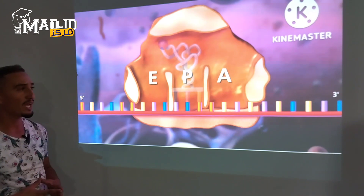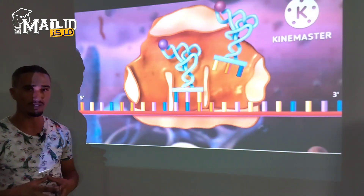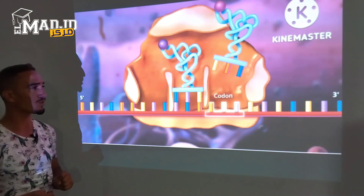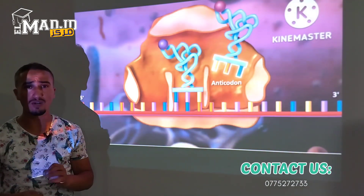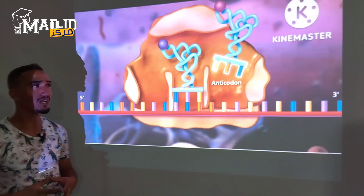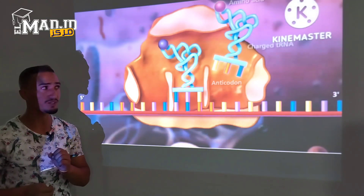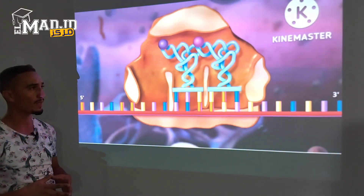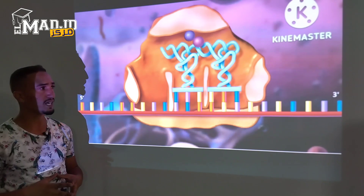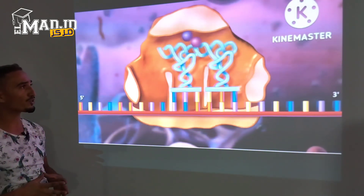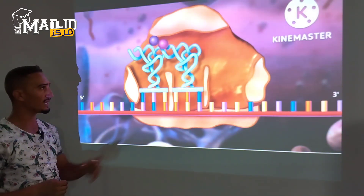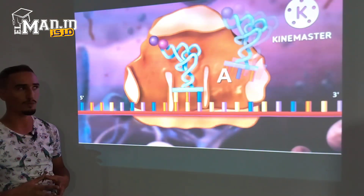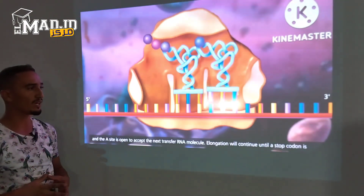During elongation, individual amino acids are brought to the messenger RNA strand by complementary base pairing of the codon and anticodon. Each anticodon of the transfer RNA molecule corresponds to a particular amino acid. A charged transfer RNA molecule binds to the A site, and a peptide bond forms between its amino acid and the one on the transfer RNA molecule at the P site. The complex slides down one codon to the right, where the now uncharged transfer RNA molecule exits from the E site, and the A site is open to accept the next transfer RNA molecule. Elongation will continue until the stop codon is reached.